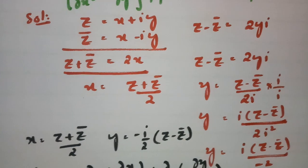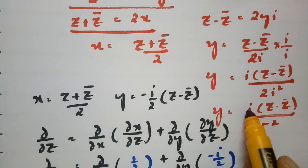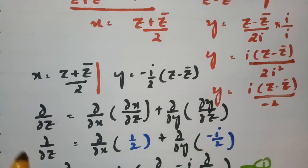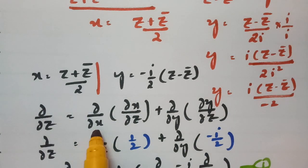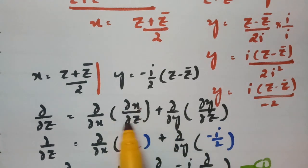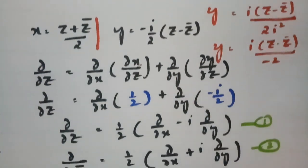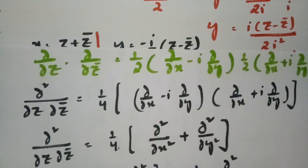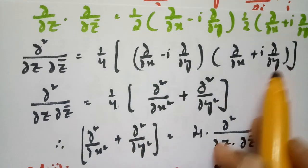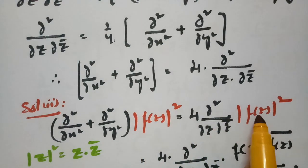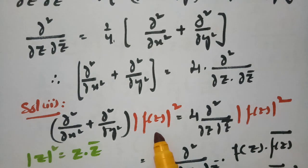For the y value, multiplying and dividing by i gives y = i(z − z̄)/(−2). Using the chain rule for ∂/∂z, with ∂x/∂z = 1/2 and ∂y/∂z = −i/2, and taking half common, we get ∂/∂z and similarly ∂/∂z̄ with plus. Multiplying both gives a² − b², completing proof one. For the second solution, multiplying by |f(z)|², using |f(z)|² = z·z̄, and differentiating gives |f'(z)|². This is what was asked to show. Thank you so much for watching.